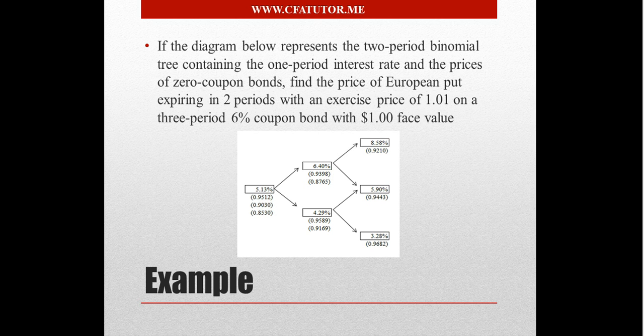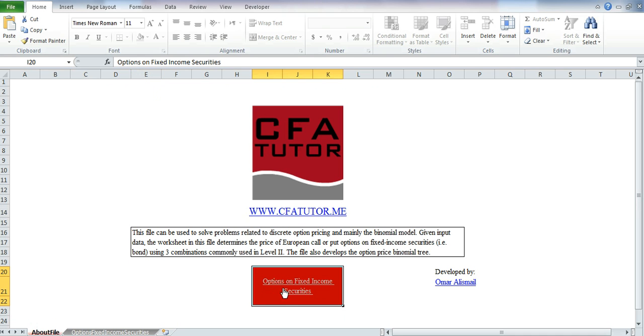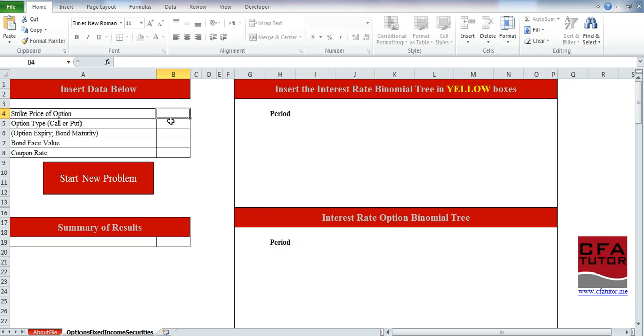So if we go to the Excel sheet, which is again available under Level 2, you have to enable the content in order to be able to view it - it's macro-enabled. We will see that we are only using the three combinations that are commonly used in Level 2. All these videos are related to CFA candidates, and therefore we are just focusing on what matters for the CFA exam. So if we click over here, we have a strike price of the option of 1.01, the option type is a put, and the bond face value is 1. I'll leave the option expiry and bond maturity just for a minute. The coupon rate is 6%, and it's already formatted as a percent, so all you have to do is enter 6%.